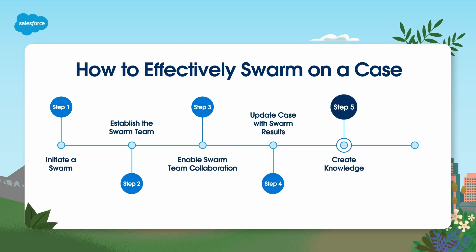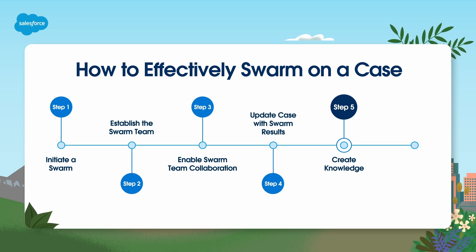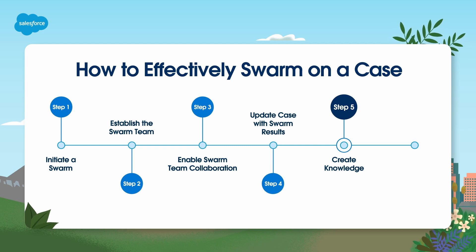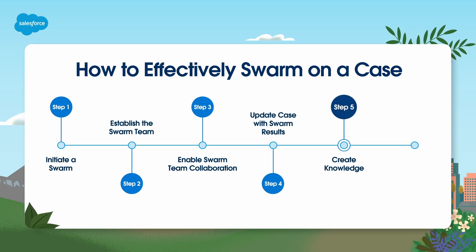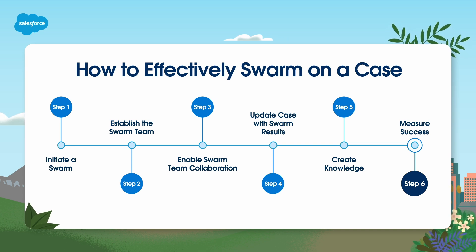Creating a swarm over and over again is inefficient. Therefore, it's critical to have a strong knowledge process in place to ensure resolutions make it into knowledge articles. This way, agents who encounter the same issue in the future can simply consult the applicable knowledge article to resolve the issue without bringing in additional resources. Finally, gaining insights into how teams are contributing to the swarm process works to reinforce the team-based culture of assisting in swarms.